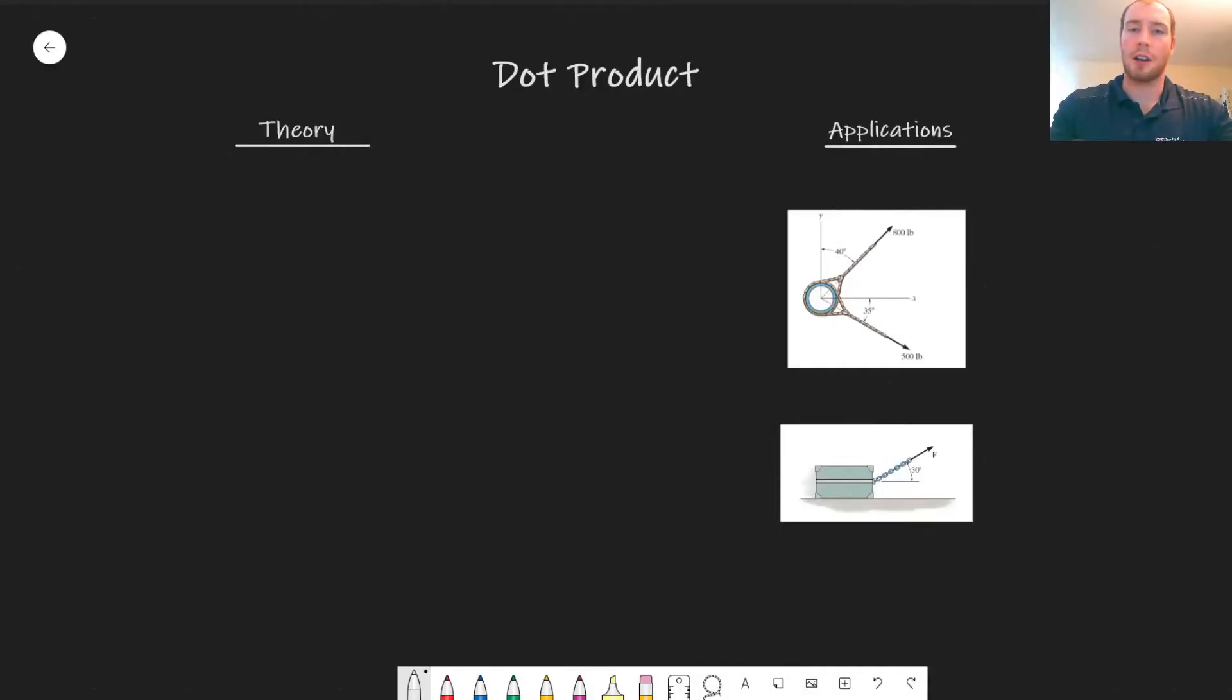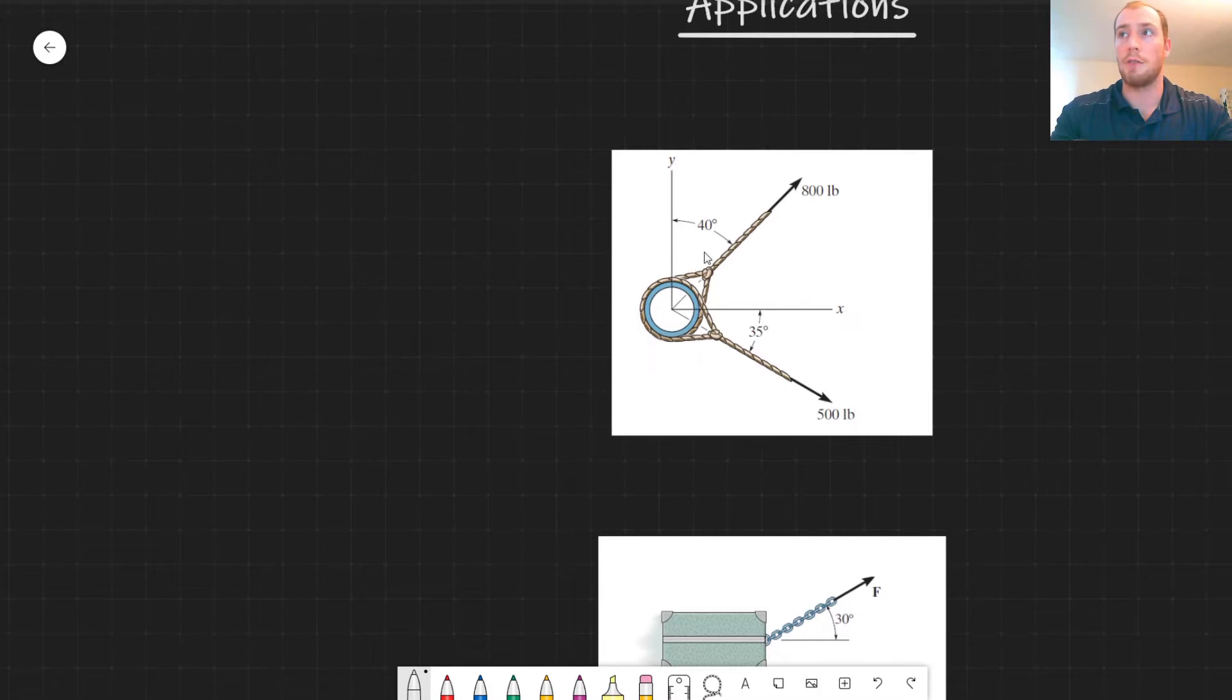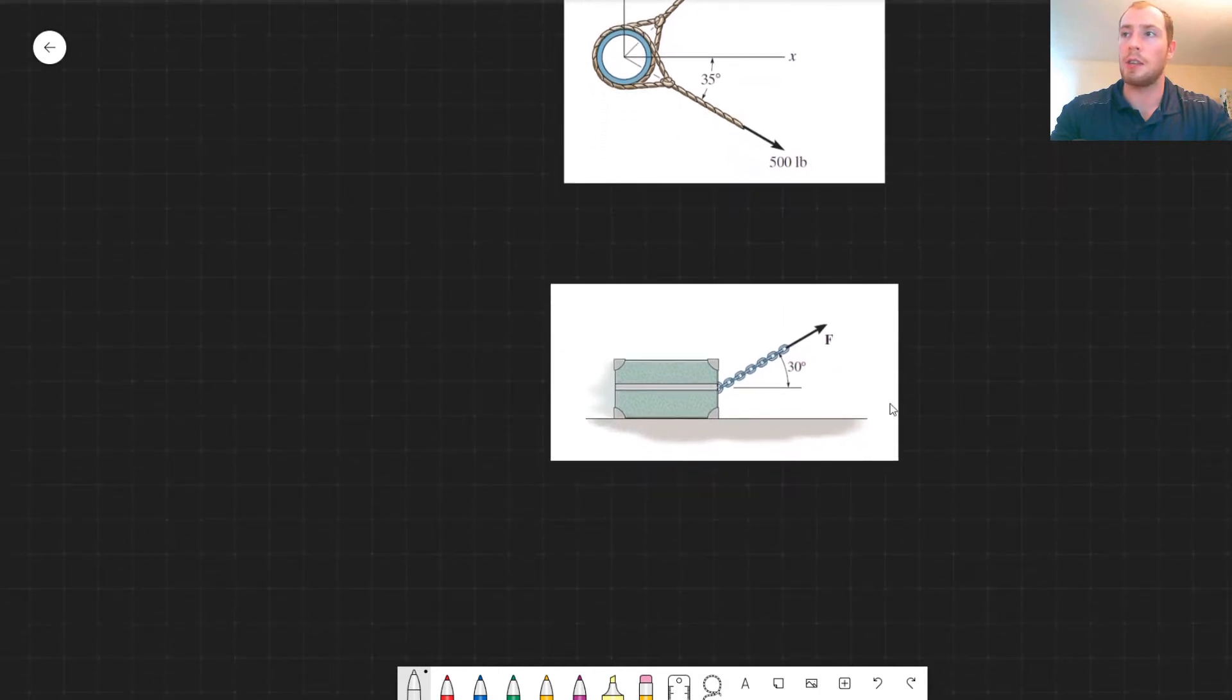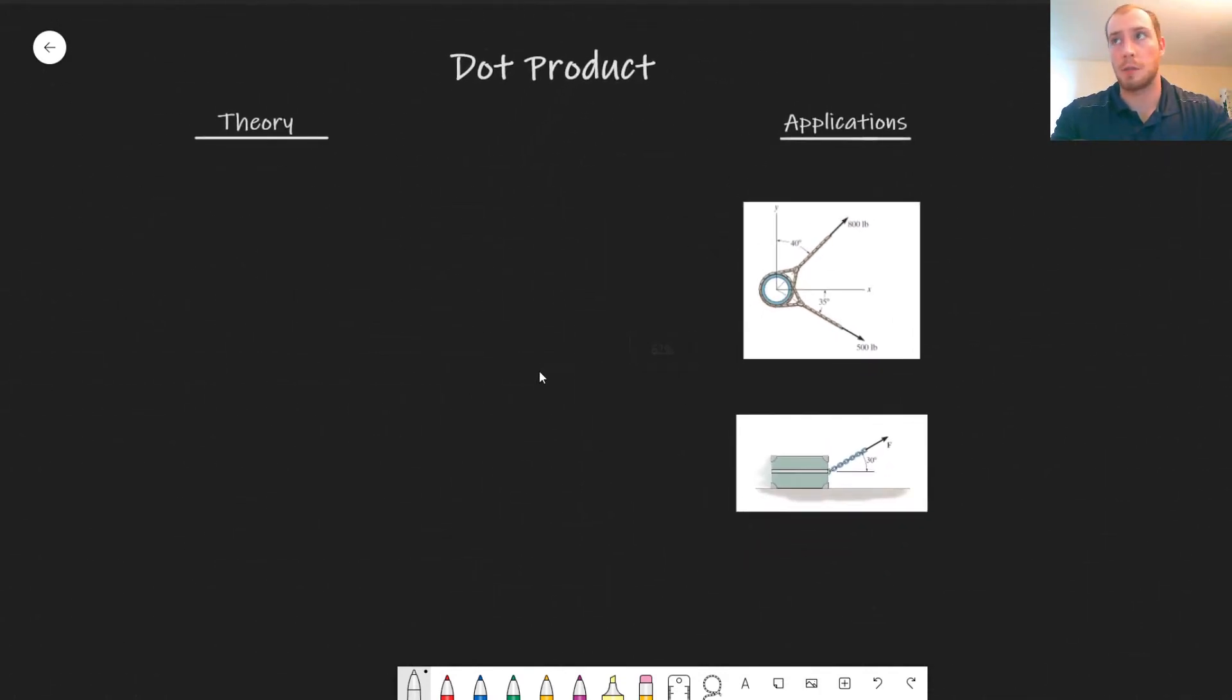In this video we're going to cover dot product. So dot product is the projection of one vector onto a second vector. In first year engineering this is useful in the statics course for determining the projection of one force vector onto a second force vector. Or it's also useful in the dynamics course where you're trying to calculate the work done by a force. So we're going to start off with some new theory and then we're going to get into applications afterwards.